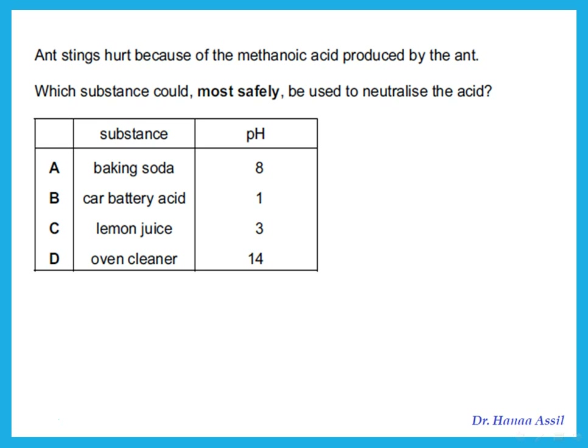Ant stings hurt because of methanoic acid produced by the ant. Which substance could most safely be used to neutralize the acid? To neutralize an acid, you need a base — something with a pH higher than 7. The choices are either A or D, but the substance must be safe to put on skin. A very strong base with pH 14 is corrosive, so the answer is A, which has pH 8.